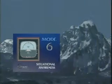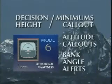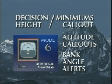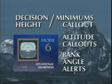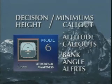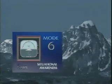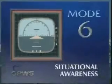Mode 6 contains altitude and bank angle call-out functions designed to increase situational awareness for the flight crew. These call-outs are selected by the customer when GPWS is initially installed in the aircraft.